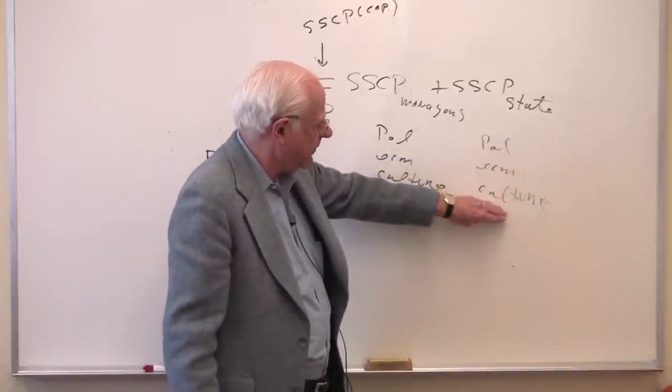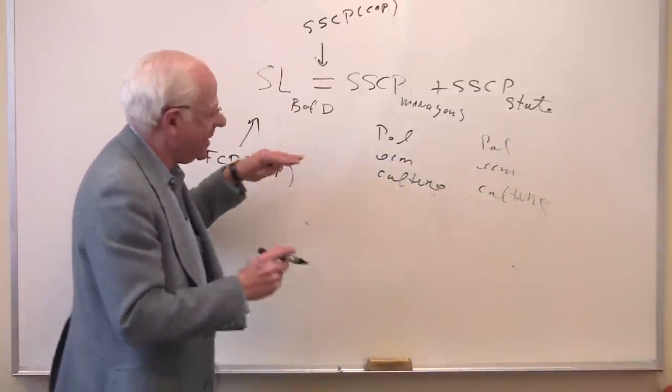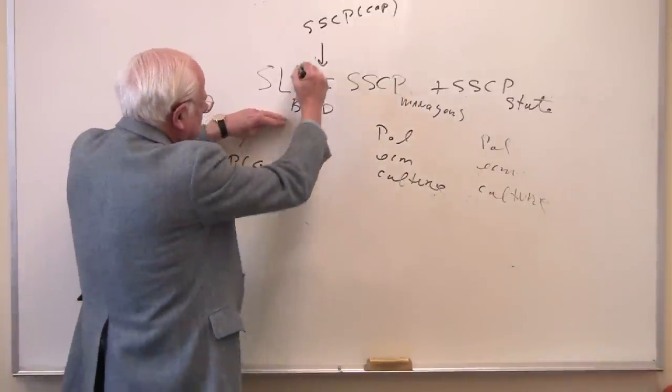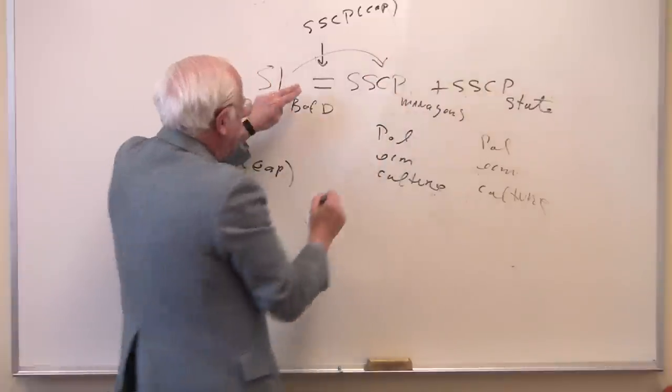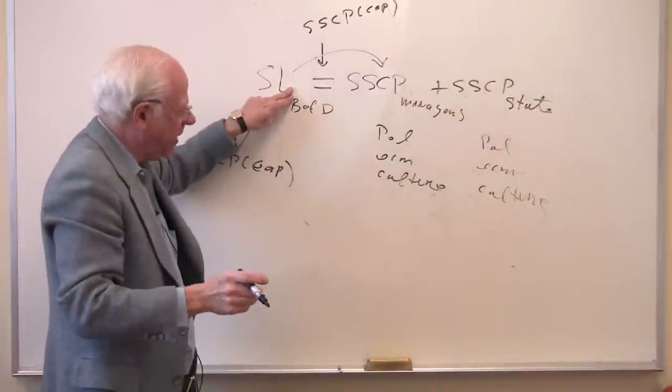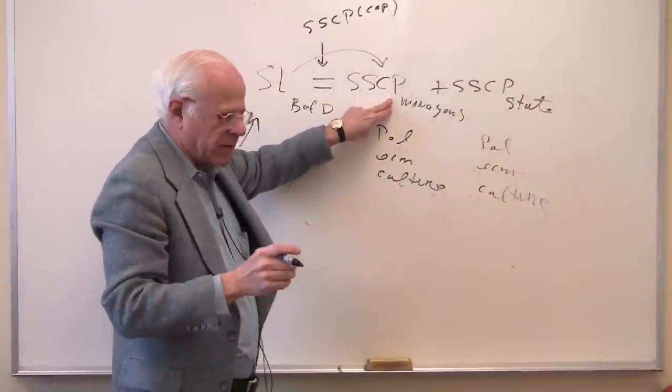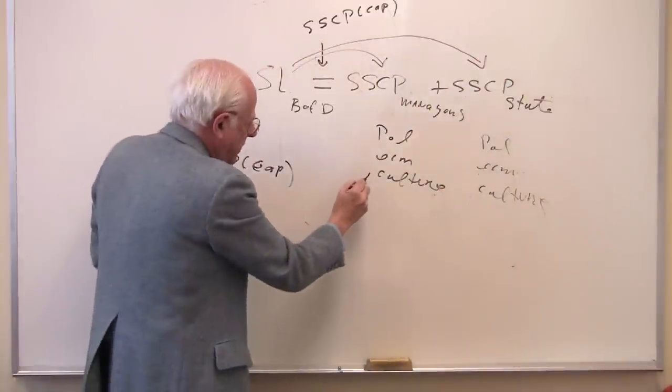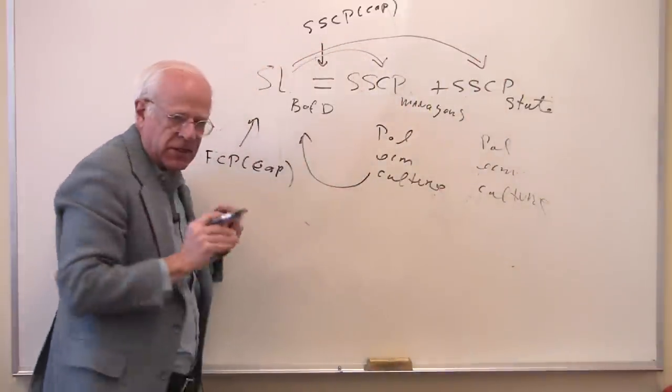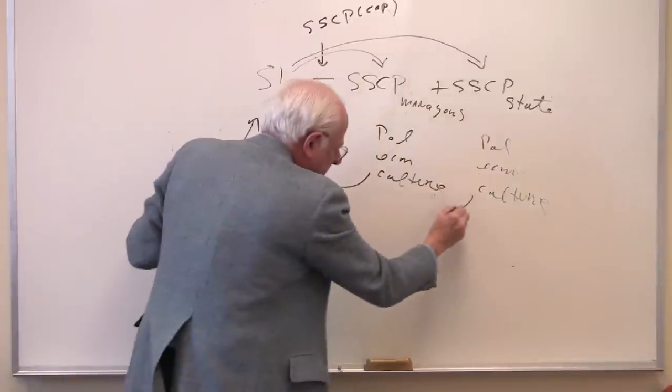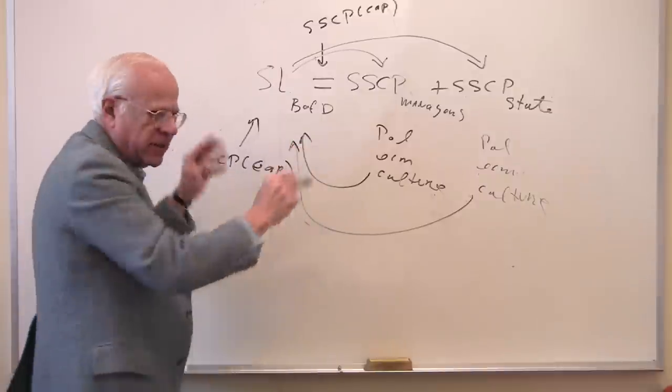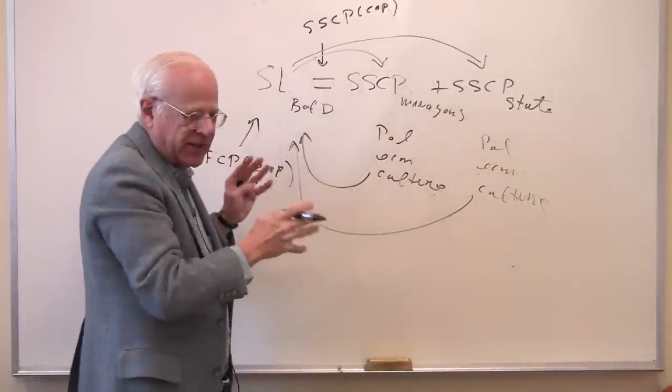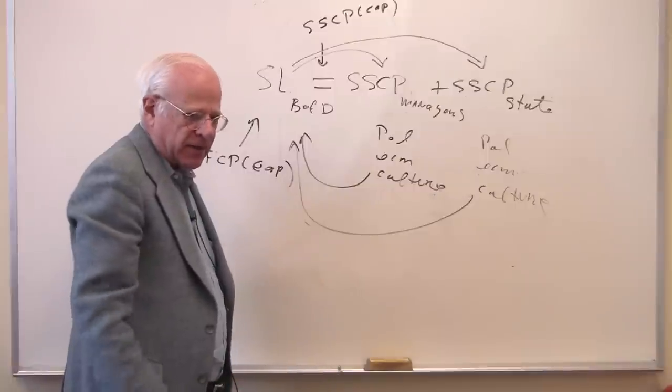So the state is providing a variety of non-class processes and it's getting a cut of the surplus in the form of taxes. So you have the board of directors distributing a portion of the surplus to the managers but also to the state to get what? The conditions of existence for the managers, the conditions of existence for the state. Keep in your mind this kind of circular flow that each side conditions the existence of the other.